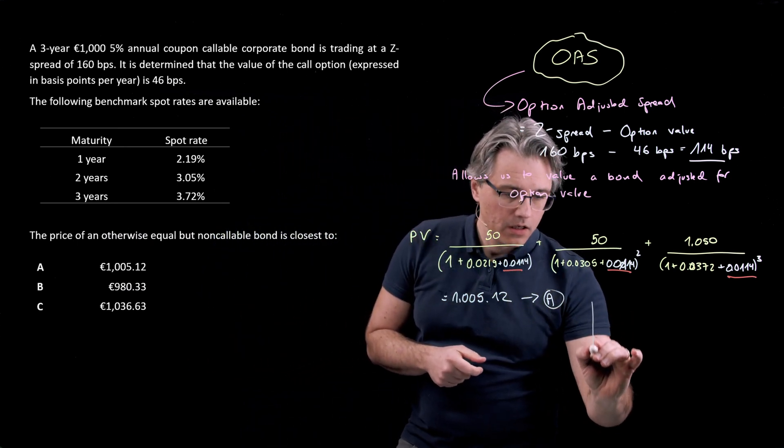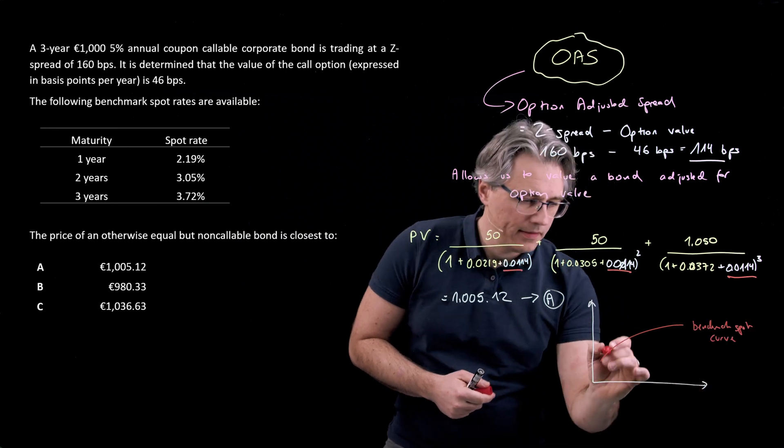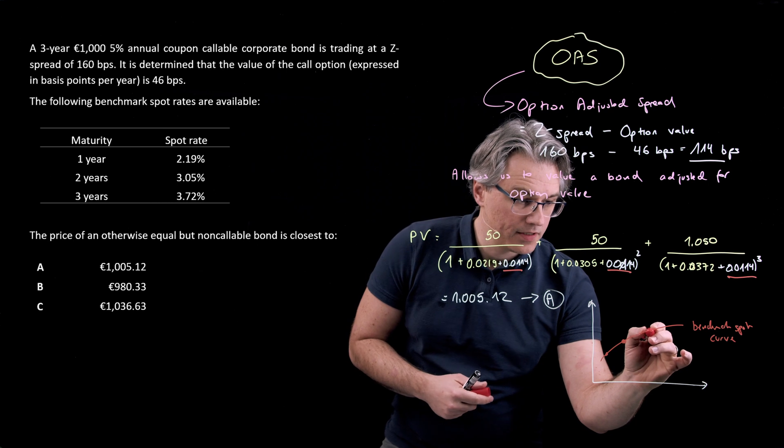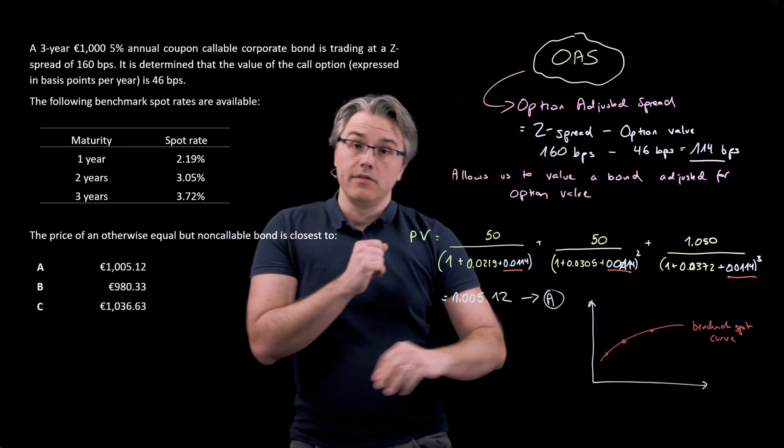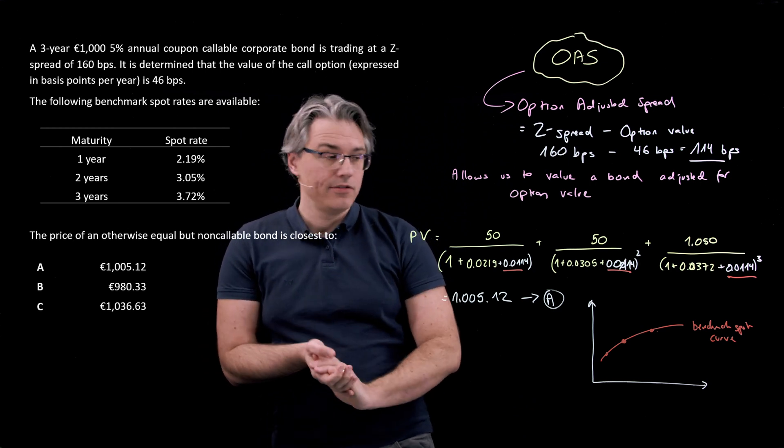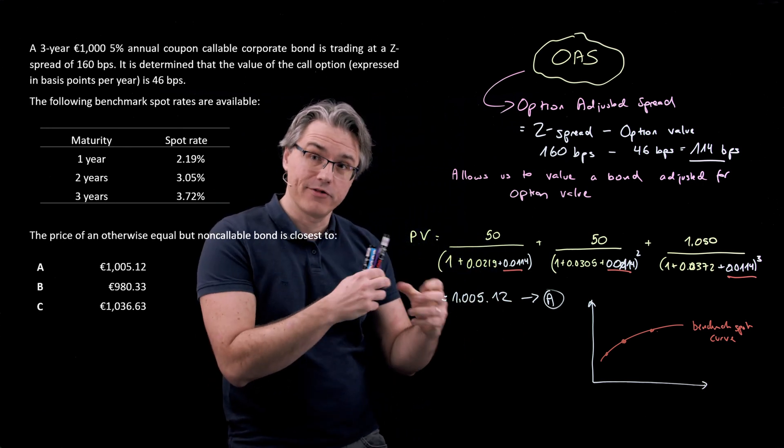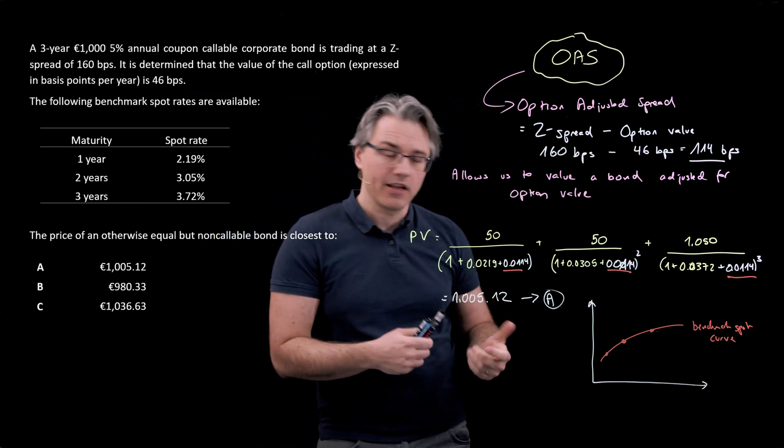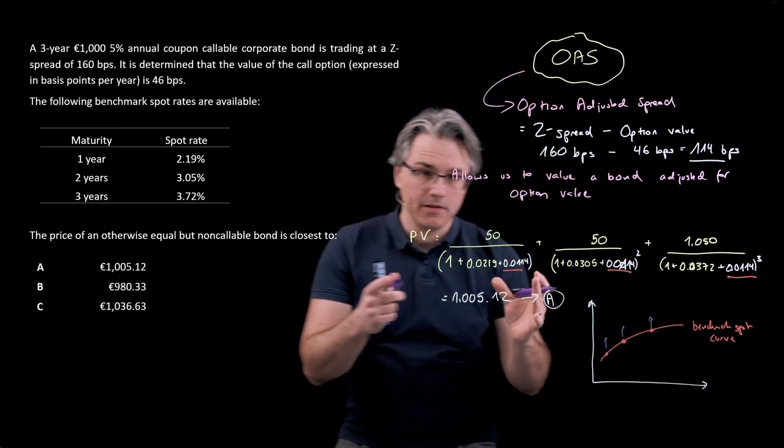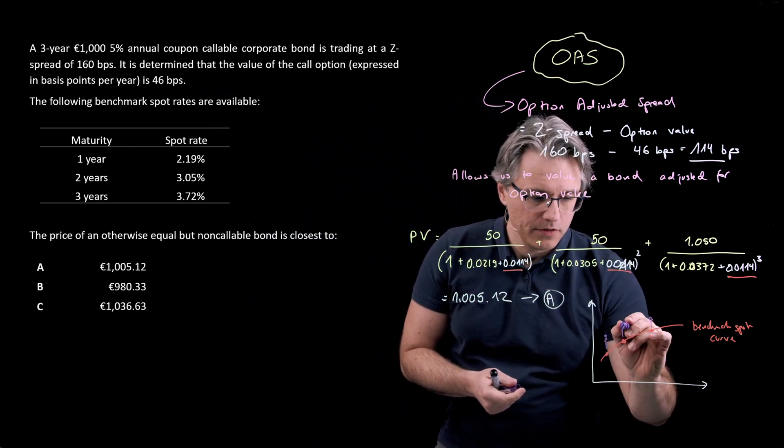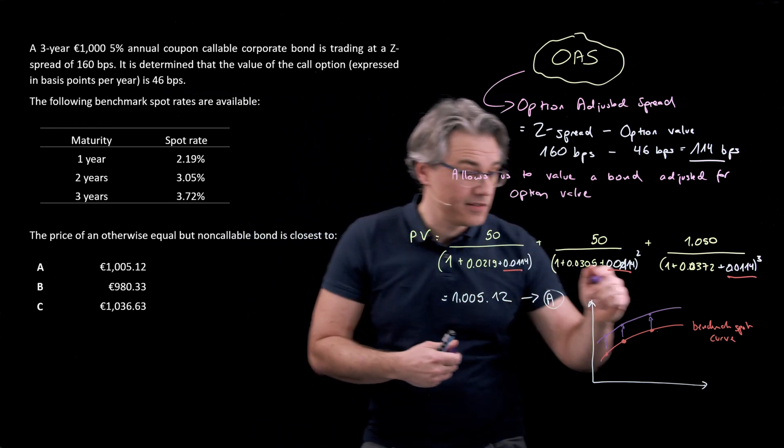One way which you can think about the OAS in relation to the Z-spread and the benchmark spot curve is as follows. If you plot the benchmark spot curve over here, this is a set of spot rates you would be using to discount cash flows which are one year, two years, or three years away from today. This is the set of discount rates you would use for discounting cash flows, typically on government securities. When you have to perform the relevant discounting of cash flows coming from a riskier instrument than a government one, you're going to use something like a Z-spread. A Z-spread is basically an amount expressed in basis points, a spread, which you would add to whatever is your benchmark spot curve to come up with a set of spot rates for discounting riskier instruments. Here, Z-spread for this specific bond was 160 basis points.